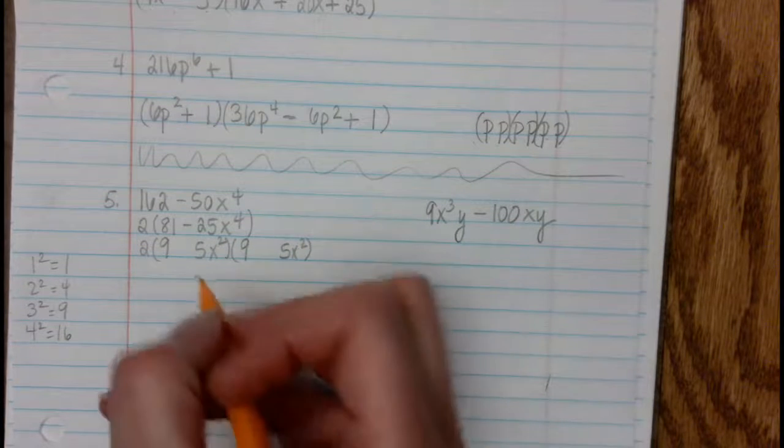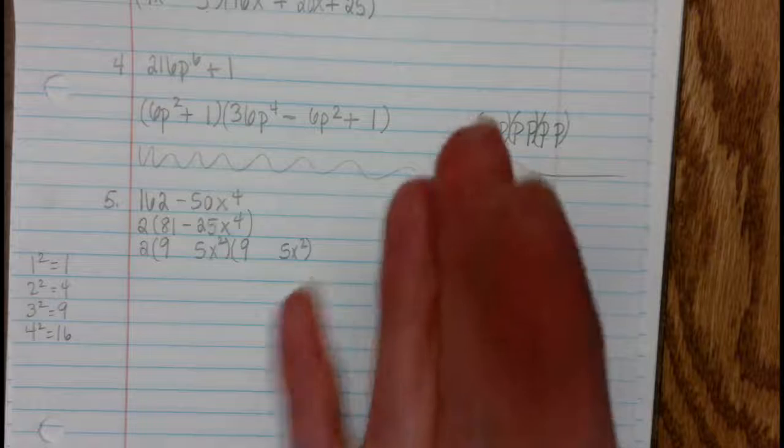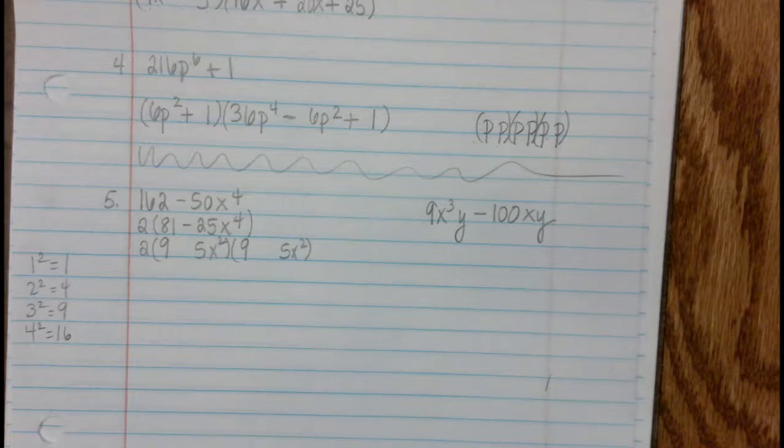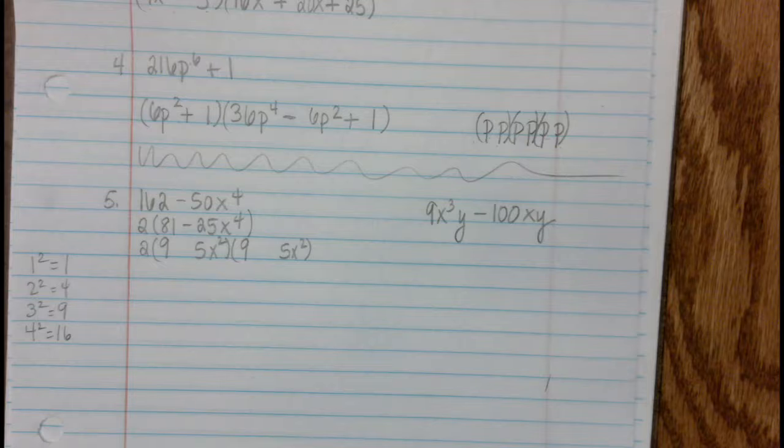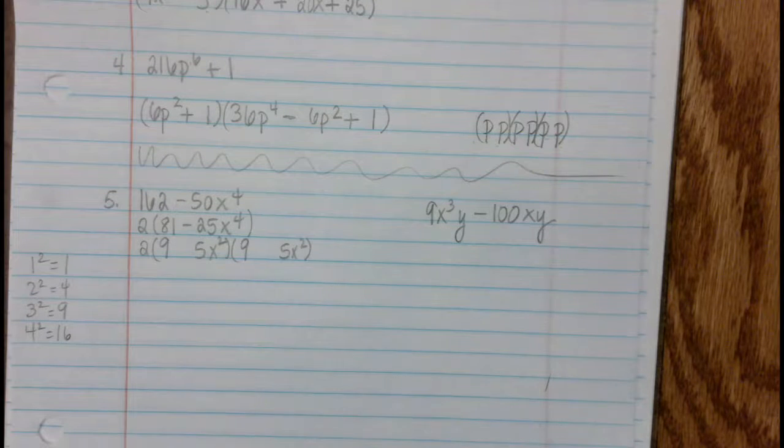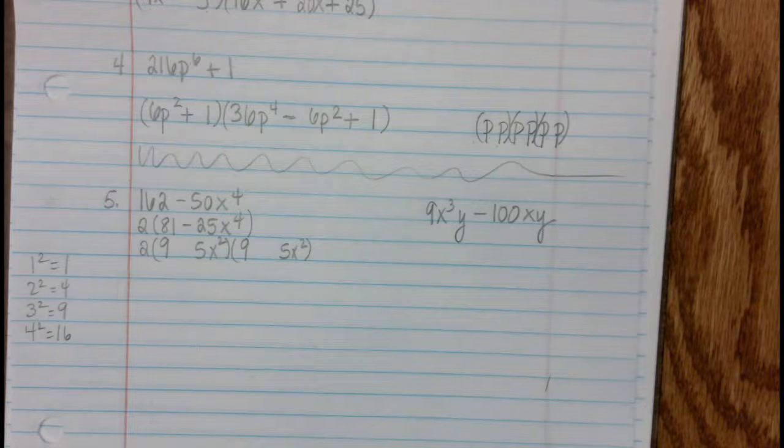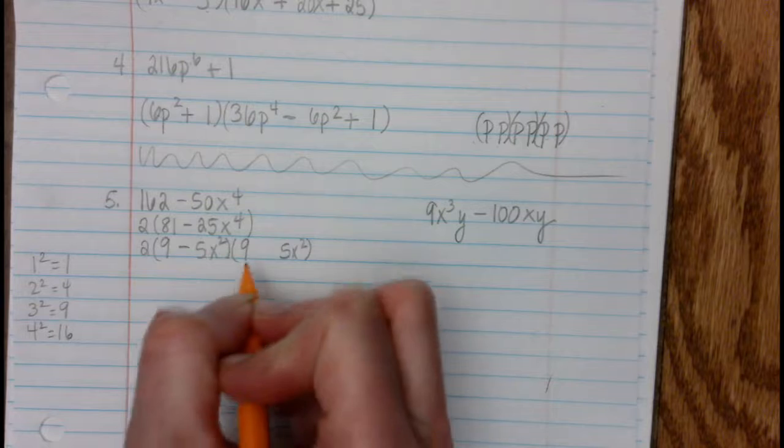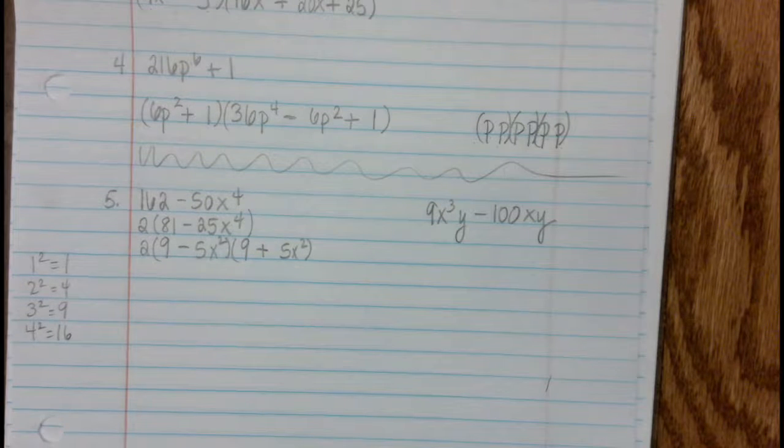The thing about difference between two squares is that you're going to have the same numerical expressions, or just expressions, I should say. The 9s are the same, the 5x squares are the same. And then it's going to be difference between two squares. I tend to write the minus first and the plus second. It does not make any difference.